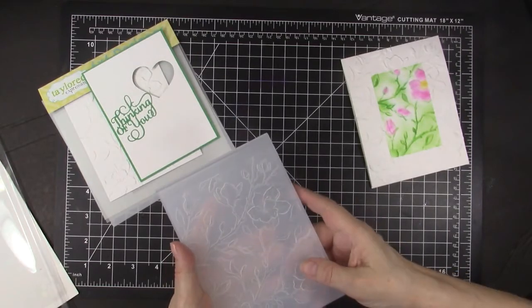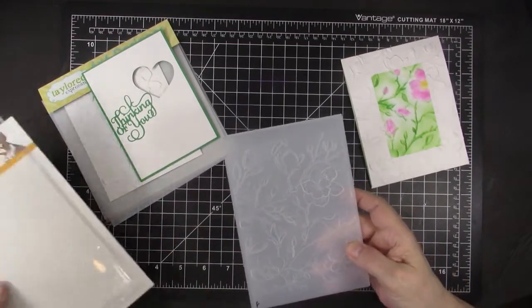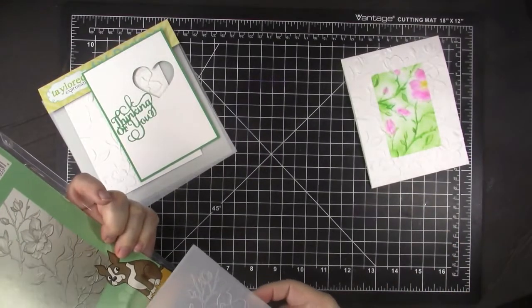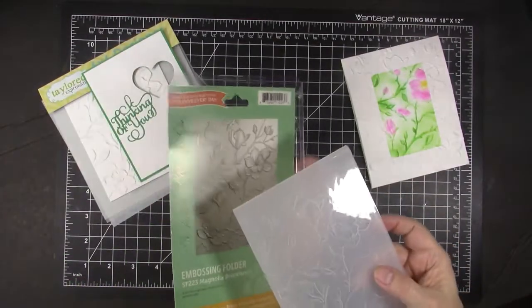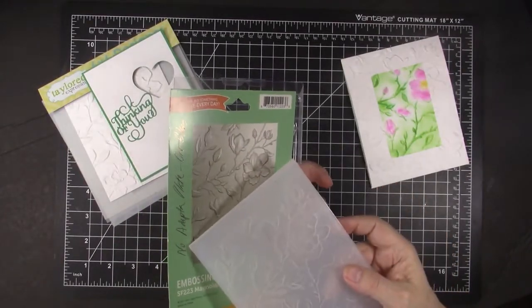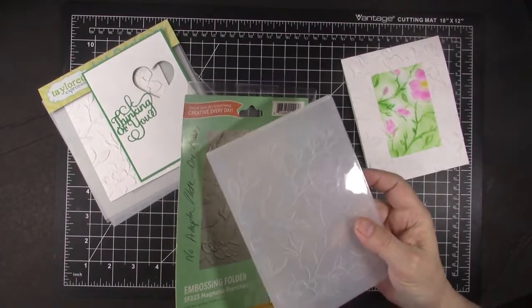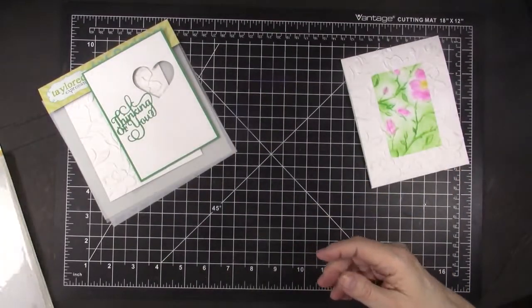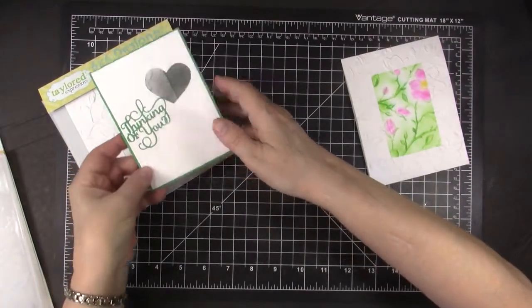But this 3D embossing folder is so thick that I only use one glass. At least I did with this card. And it is from Simon Says Stamp, and it's called Embossing the Magnolia Branches. I make a note after I experiment, and I tell myself the next time I pick it up, that's right, I didn't use the adapter plate, and I only use one glass with this. So that's a little tip to use.